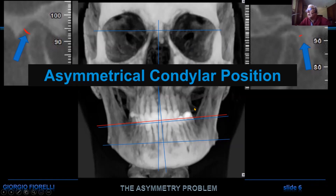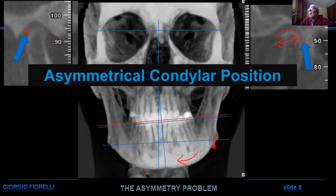This is usually good news, because you can imagine that by advancing this condyle and bringing it more symmetrically centered to the fossa, you are doing the opposite path — you are rotating the mandible, lowering the angle of the mandible, and making the facial structure not so asymmetrical. Sometimes, or even many times, you can make it totally symmetrical.